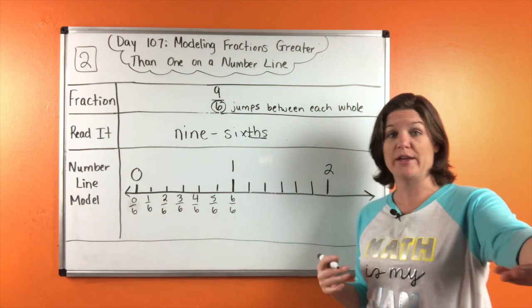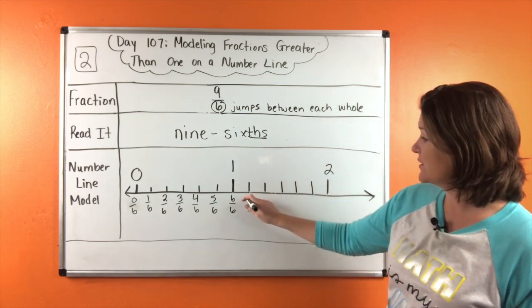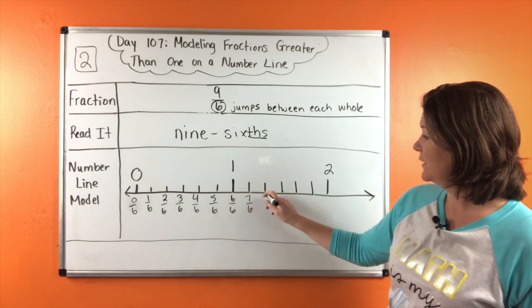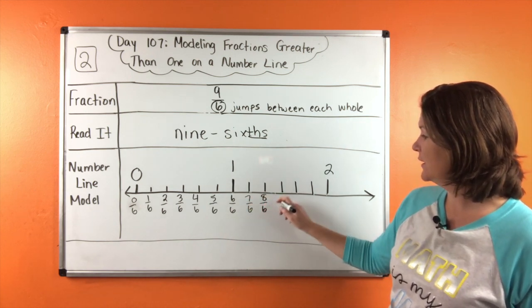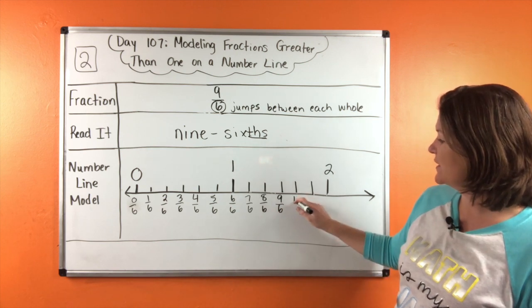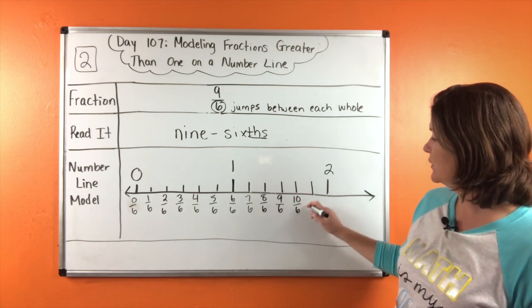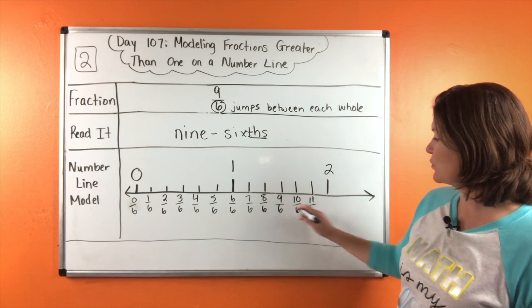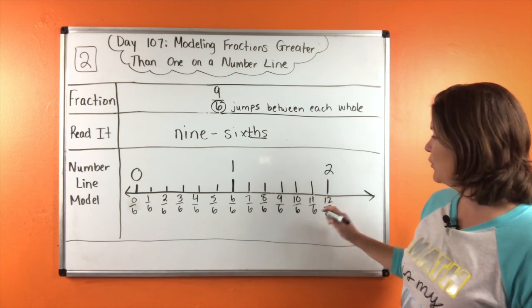After six sixths comes what? Seven sixths, eight, and nine sixths. There we go right there. I'm going to continue all the way to this two, just because I can. But this is where we need to stop and plot the point.